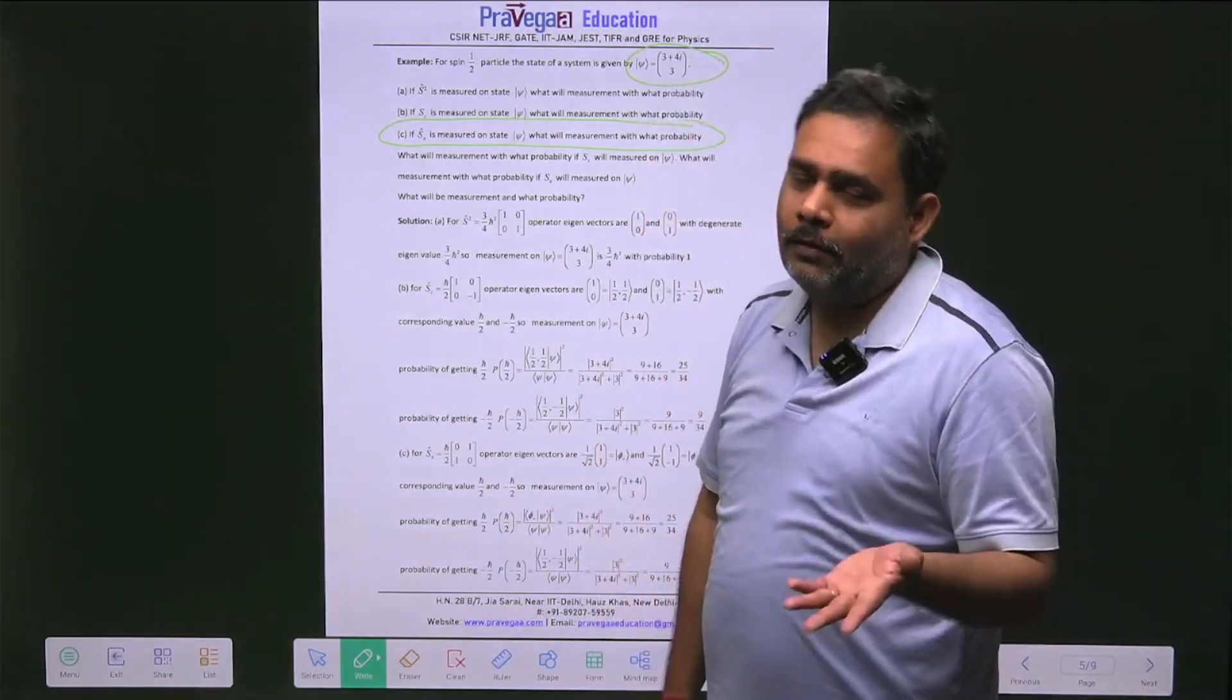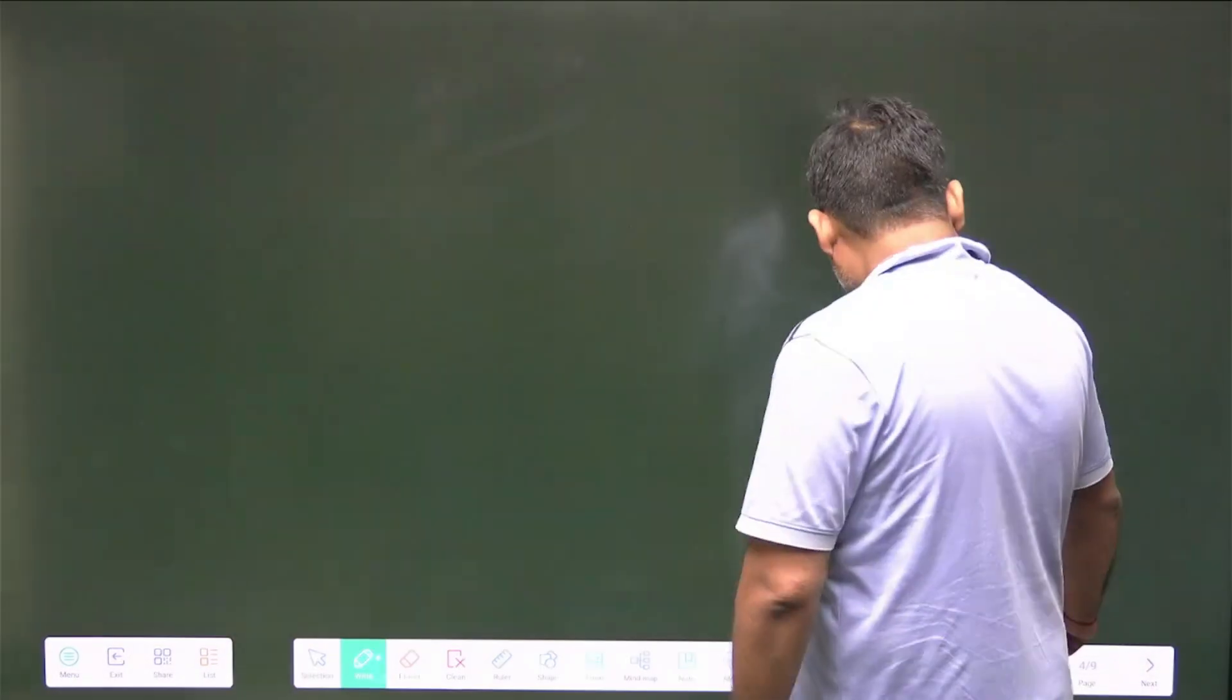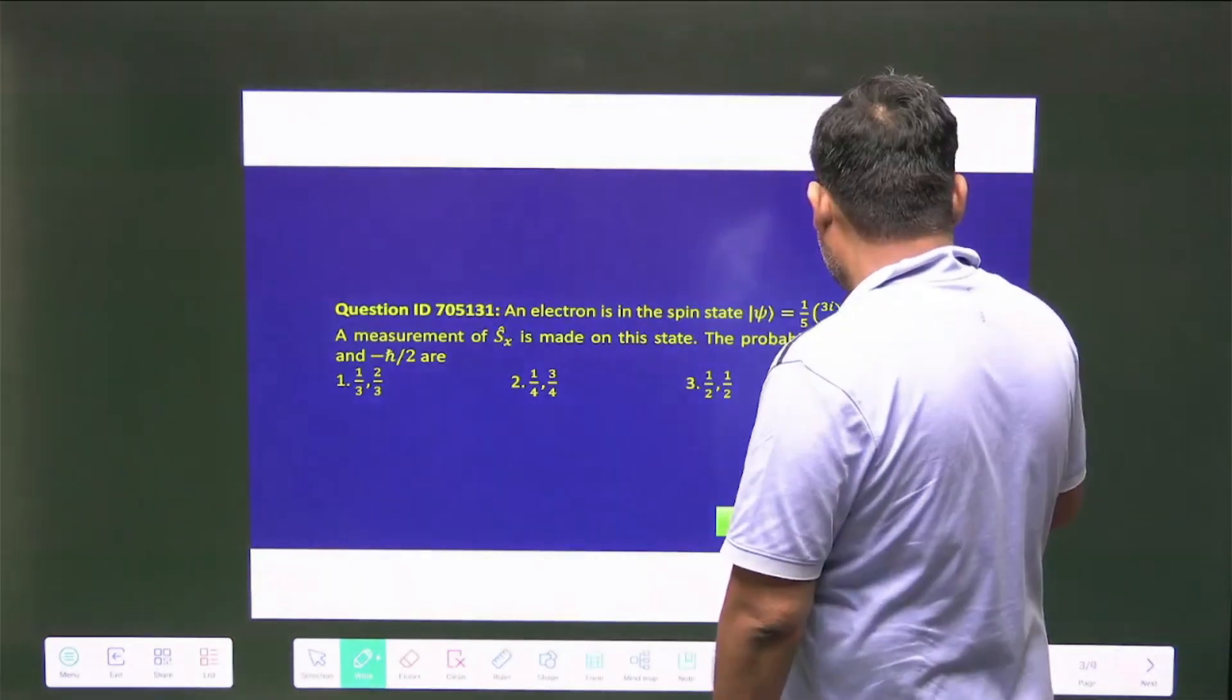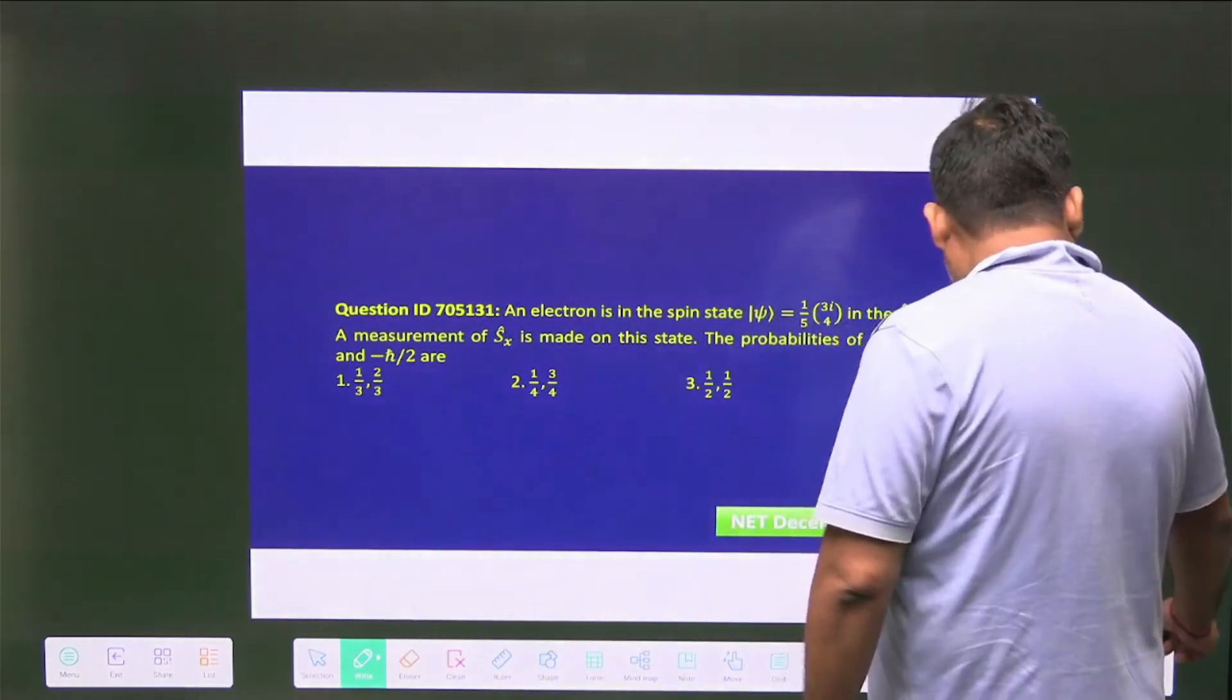So students, let's try to solve this. Once you have this particular question, we can solve. This is |ψ⟩ = 1/5(3i, 4).